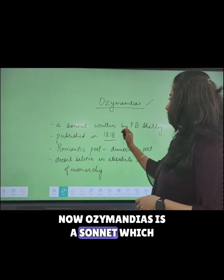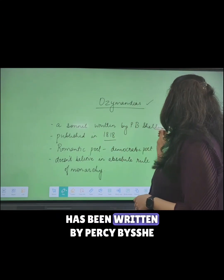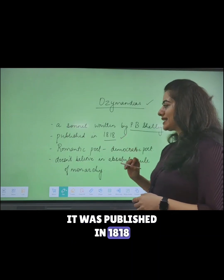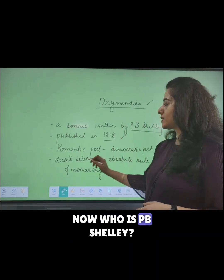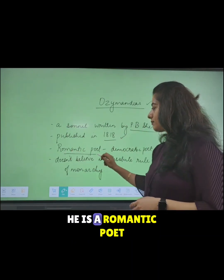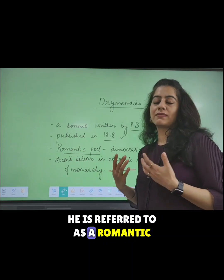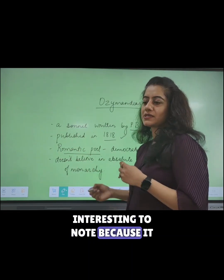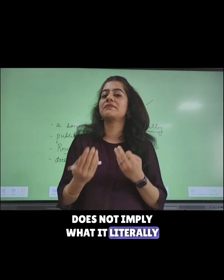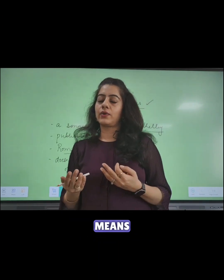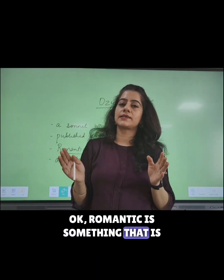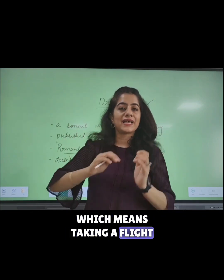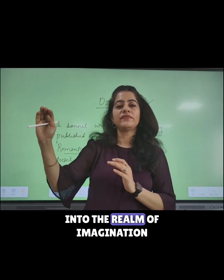Ozymandias is a sonnet which has been written by Percy Bysshe Shelley. It was published in 1818. Now, who is Percy Bysshe Shelley? He is a Romantic poet. The word Romantic here is interesting to note because it does not imply what it literally means. Romantic is derived from the word Romance, which means taking a flight into the realm of imagination.